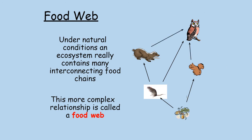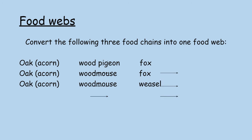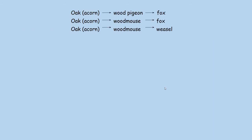The more arrows coming off a species, the more things eating it are competing for it, since there are only a certain number of individuals. For example, the owl and weasel will be in competition for squirrels and rats. Converting three food chains into one food web: acorns → wood pigeon → fox; acorns → wood mouse → fox; acorns → wood mouse → weasel. The fox gets its energy from the wood pigeon, wood mouse, and possibly the weasel.